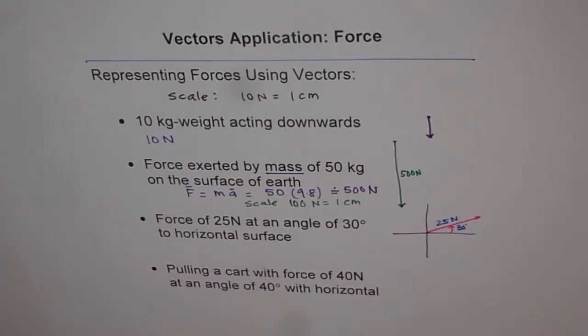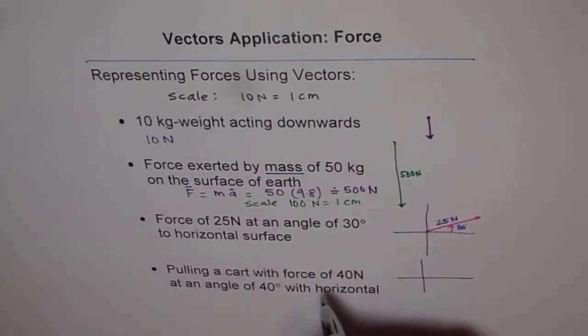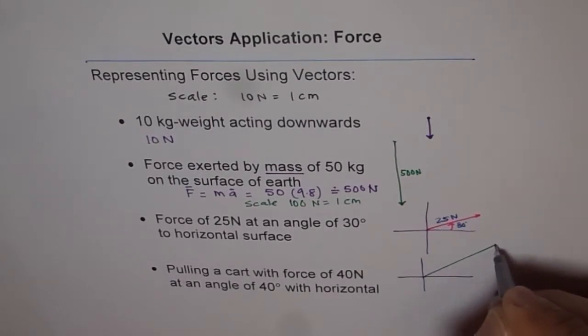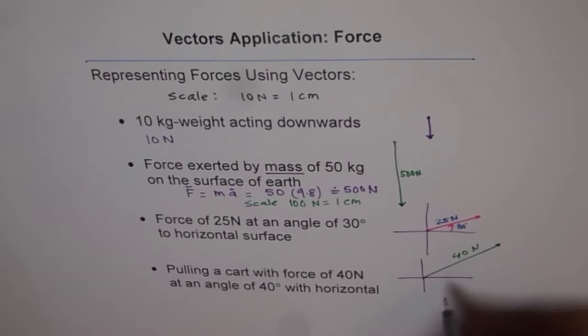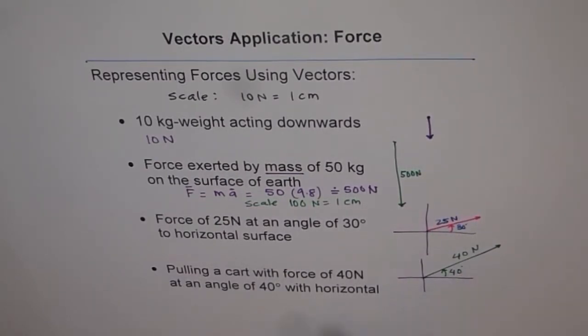The next one is quite similar. But in this case, it is 40 Newtons. We could draw a line which is 4 centimeter long and at an angle of 40 degrees. This is 40 degrees and this is 4 centimeters. So we write 40 Newton here and the angle is 40 degrees. That represents pulling a cart with a force of 40 Newtons at an angle of 40 degrees with horizontal.